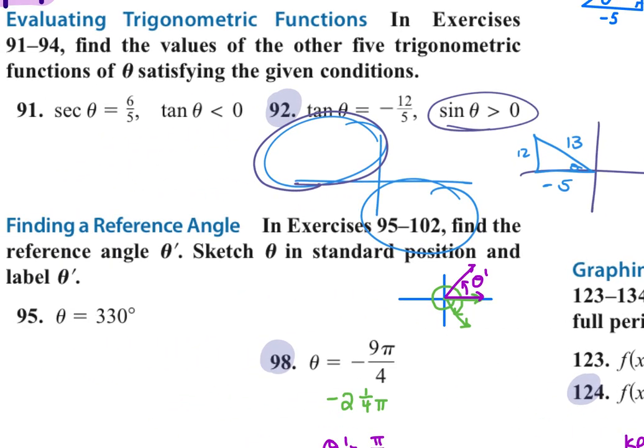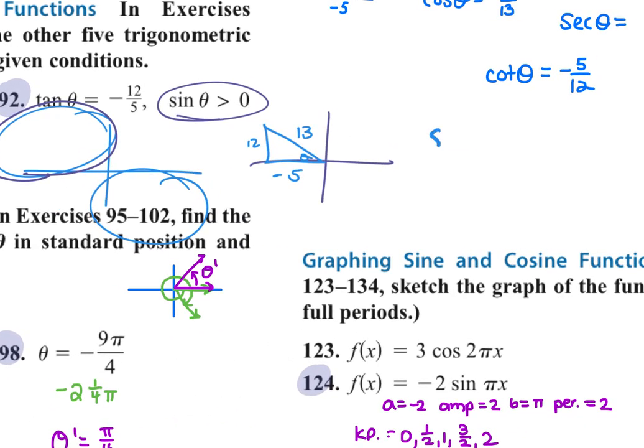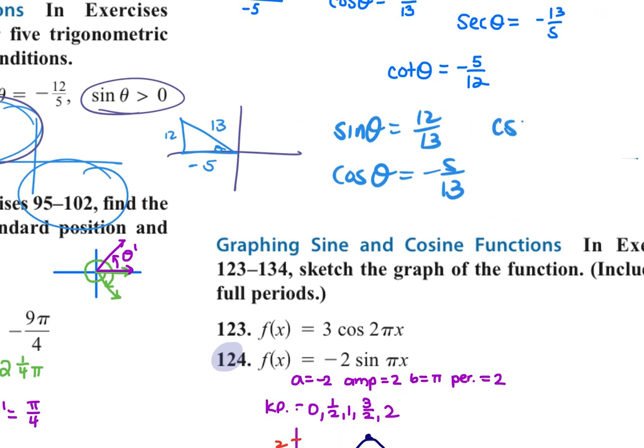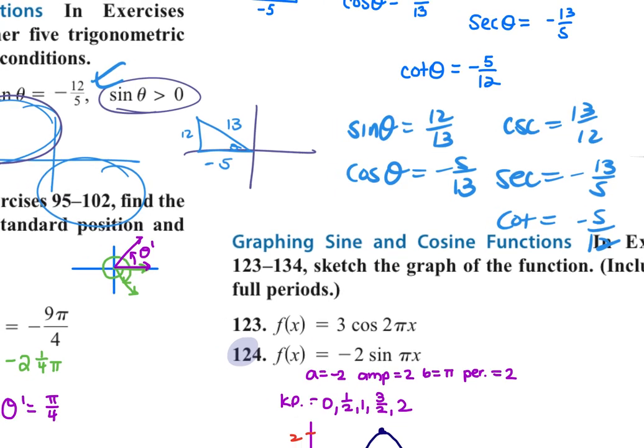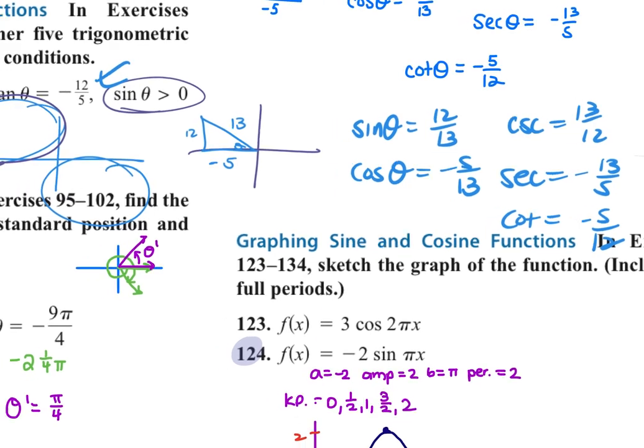And then it says to find the rest of the five trig functions. So sine, 12 over 13, cosine, negative 5 over 13. I have the tangent. Cosecant, 13 over 12. Secant, negative 13 over 5. And cotangent would be the reciprocal of what it originally gave you, negative 5 over 12. So use the information given to move it into the quadrant it's supposed to be, and then complete your triangle.